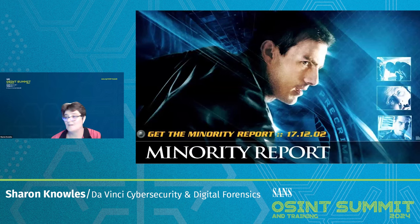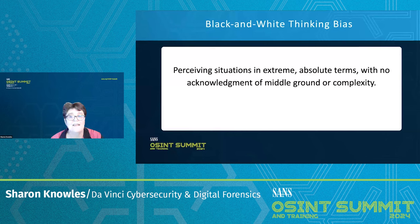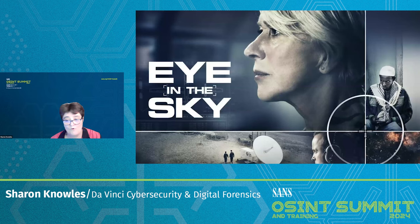Black and white thinking bias: perceiving situations in extreme, absolute terms with no acknowledgement of middle ground or complexity. An investigator might categorize websites as entirely trustworthy or completely untrustworthy, failing to recognize that credibility can vary and should be evaluated case by case. The movie here is Eye in the Sky — the characters deal with the moral dilemma of a drone strike, often resorting to black and white thinking — either completely for or against — without considering a middle ground.